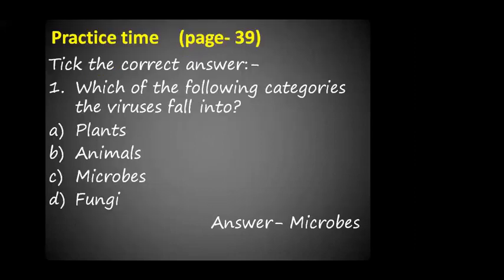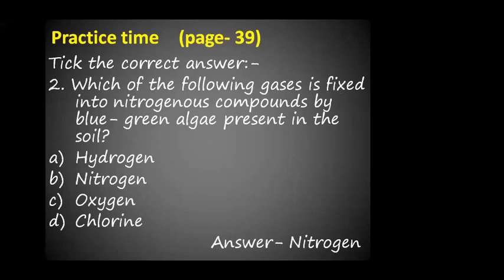Let's move to practice time, page number 39. Tick the correct answer. Which of the following categories do viruses fall into? The options are plants, animals, microbes, or fungi. The answer is C, microbes. Which of the following gases is fixed into nitrogenous compounds by blue-green algae present in the soil? The options are hydrogen, nitrogen, oxygen, or chlorine. The right answer is B, nitrogen.